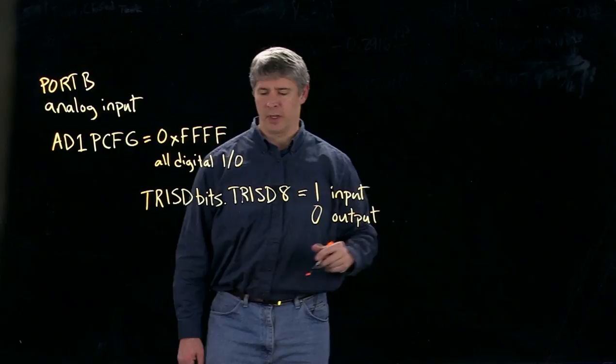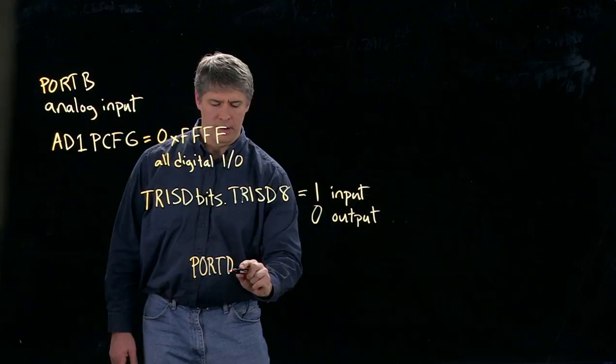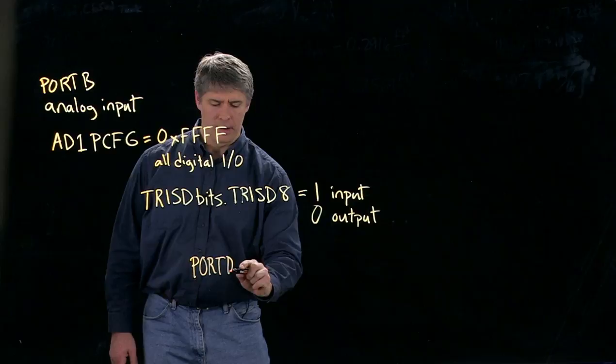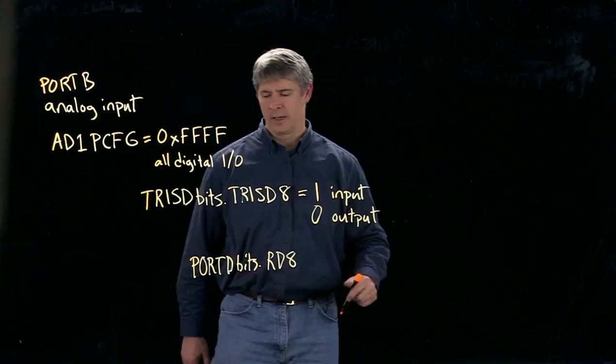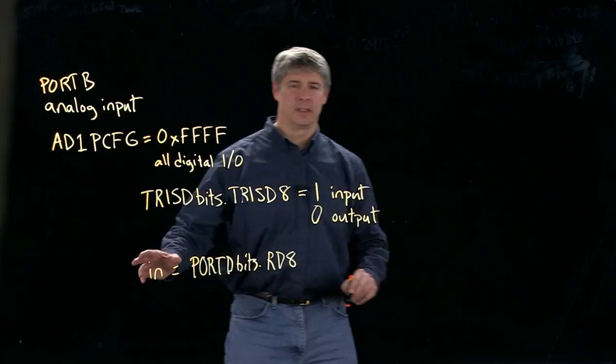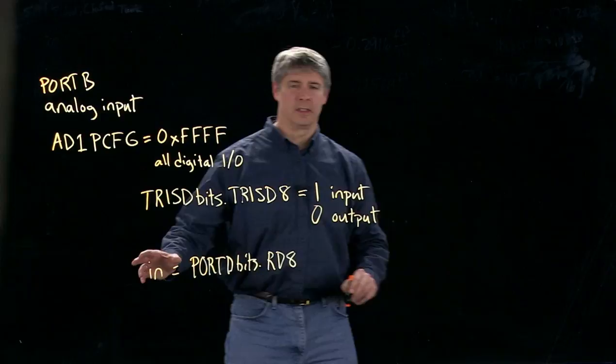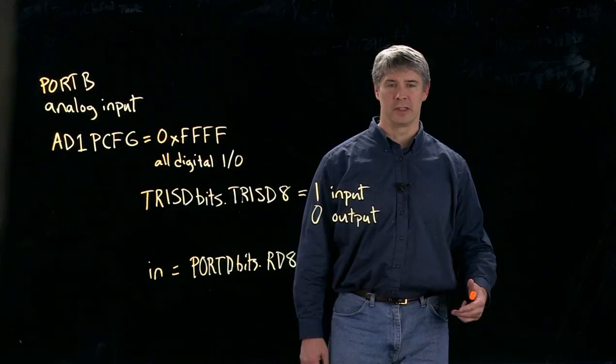...then we can use PORTD bits dot RD8. Calling this will give us the value of pin 8. So we can say unsigned integer variable n is equal to that. And if it's a 1, that means the input value is close to 3.3 volts. And if it's a 0, that means the input value is close to 0 volts.